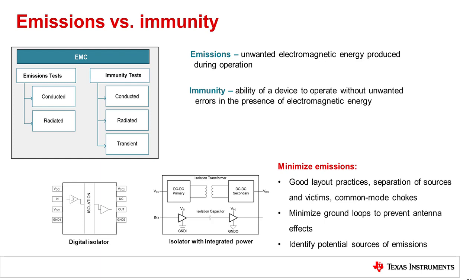Ultimately, the amount of emissions measured will depend on PCB design and test setup. For this reason, good layout practices to separate potential interactions, well-managed power supplies, minimizing current loops, and understanding potential sources of emissions will help to ensure that at a circuit level possible disruptions are mitigated.